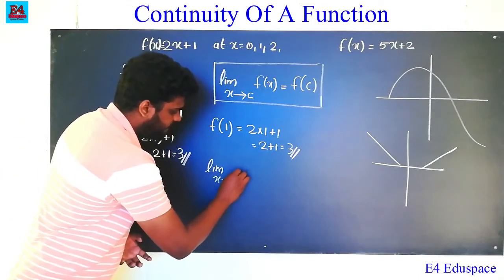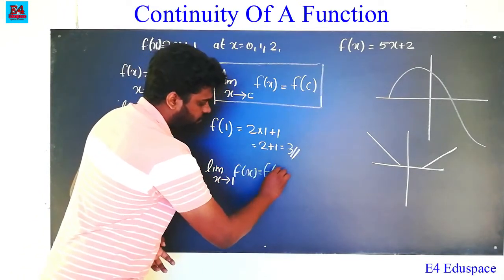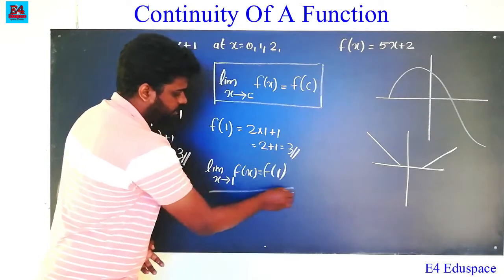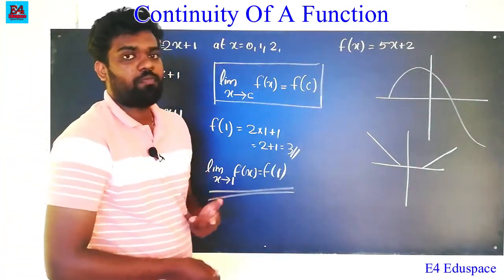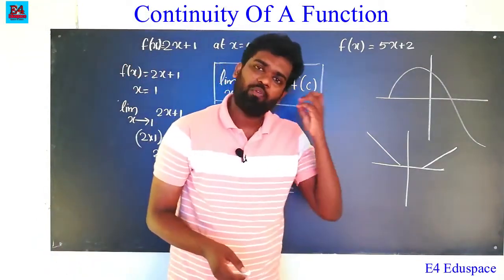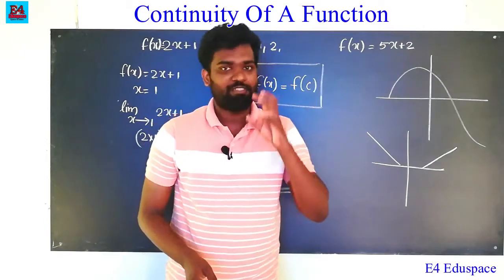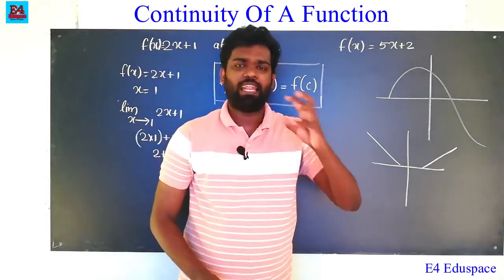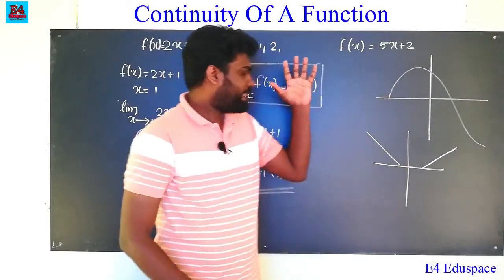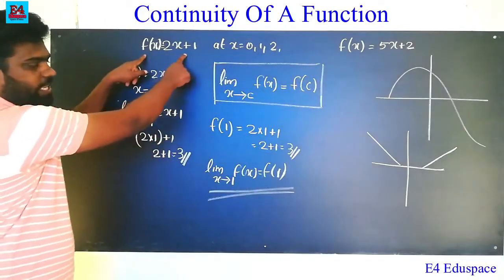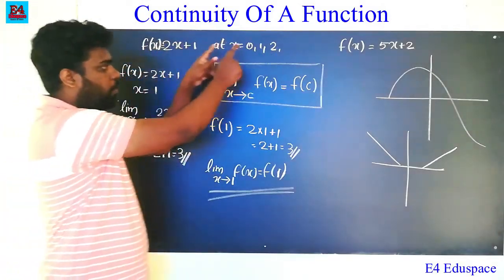Now checking at x equal to 1: limit x tending to 1, f of x equals 2 into 1 plus 1 equals 3. And f of 1 equals 2 into 1 plus 1 equals 3. Therefore limit x tending to 1, f of x is equal to f of 1. So the function is continuous at x equal to 1.